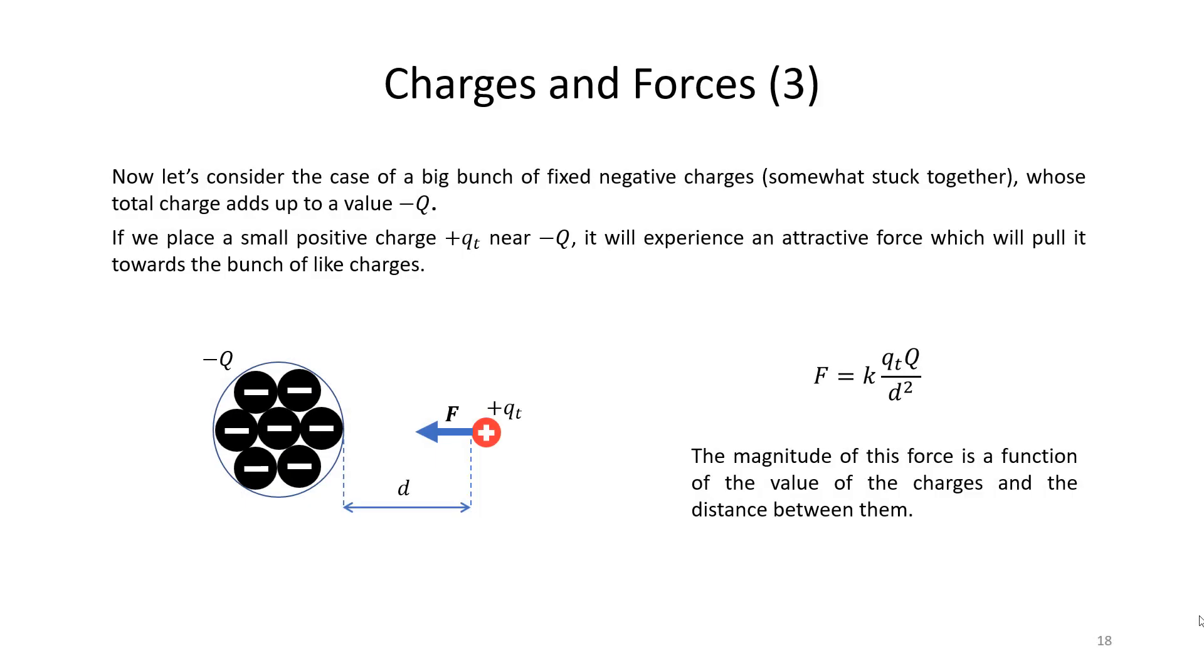Let's look at the specific case when we have a big bunch of fixed negative charges indicated by minus Q in the diagram which are somewhat stuck together and a much smaller positive charge plus Qt which is placed in the space surrounding this negative bunch. There will be an attractive force which will act to bring the positive charge towards the negative bunch and we can use the formula to work out the magnitude of this force.